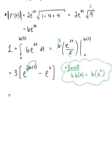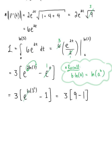Using this property, this becomes 3 multiplied by the natural exponential raised to the natural log of 3 squared, minus 1, since anything raised to the 0 is 1. Now that we have the natural exponential raised to the natural logarithm, we can apply the inverse property and they undo each other, leaving us with 3 multiplied by 3 squared, which is 9, minus 1, or 3 multiplied by 8, for a final answer of 24 units.